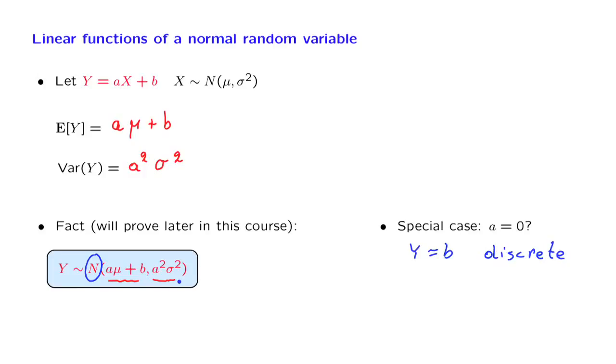Well, we will adopt this as convention. When we have a discrete random variable which is constant, it takes a constant value, we can think of this as a special degenerate case of the normal with mean equal to b and with variance equal to 0. Even though it is discrete, not continuous, we will still think of it as a degenerate type of a normal random variable. And by adopting this convention, then it will always be true that a linear function of a normal random variable is normal, even if a is equal to 0.